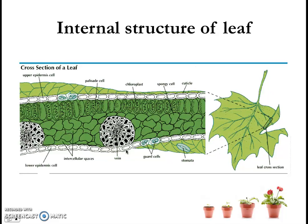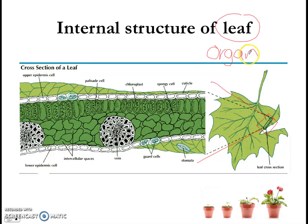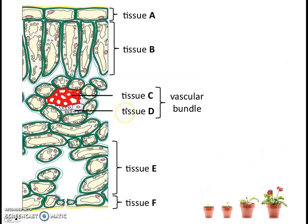Now we're done with the external structure of a leaf. We're going to go in and look at the internal structure. Here's my leaf — if I cut a cross section of it, that means I slice it this way and look at the cross section, expanding it and looking at it under the microscope. Using a magnifying glass, I will see this cross section — I will see many layers of different cells. Because, in fact, a leaf is an organ. I hope you remember this from the cells chapter. A leaf is an organ, and the organ contains many different tissues. So there are many different layers of tissue in a leaf.